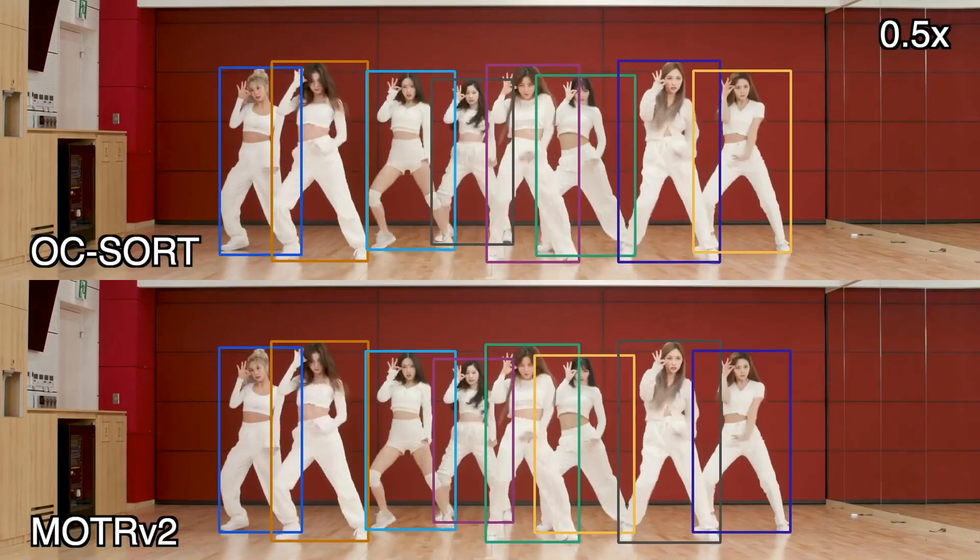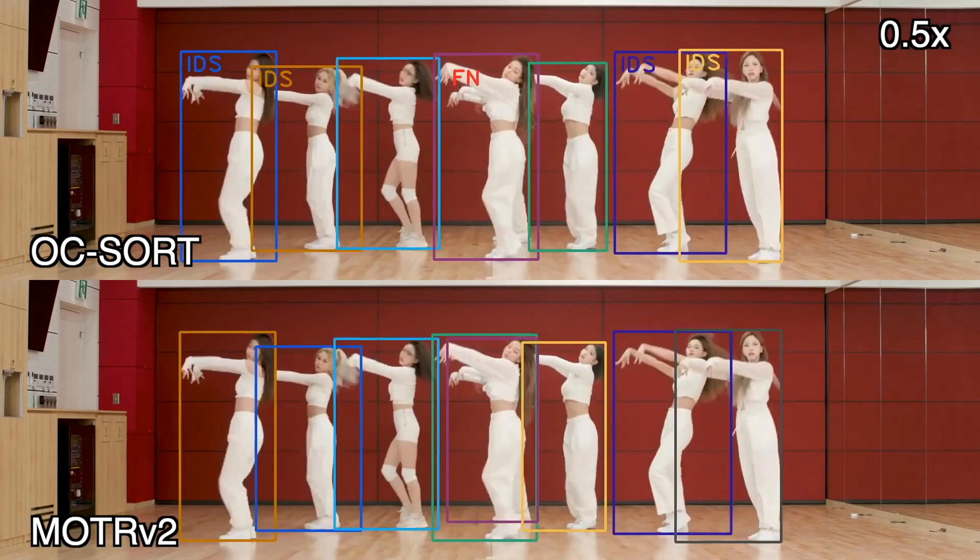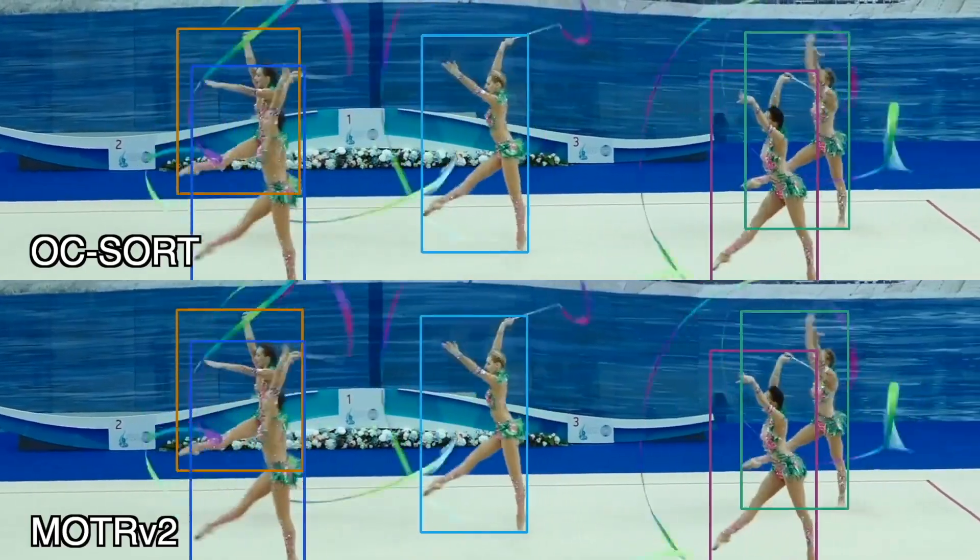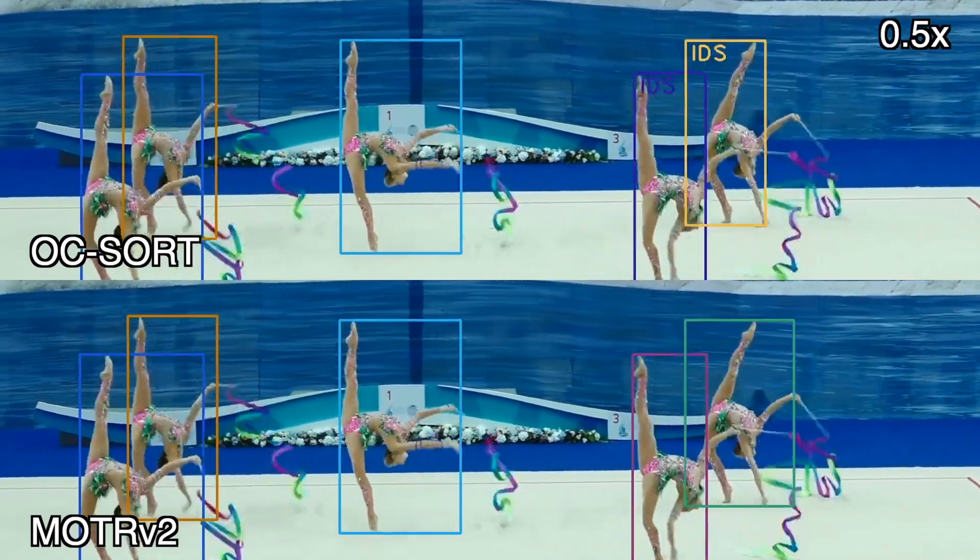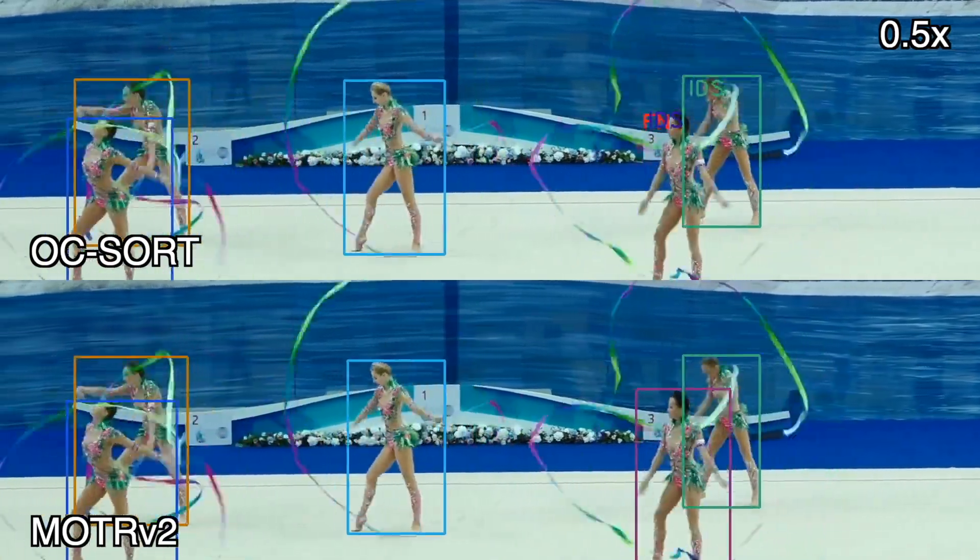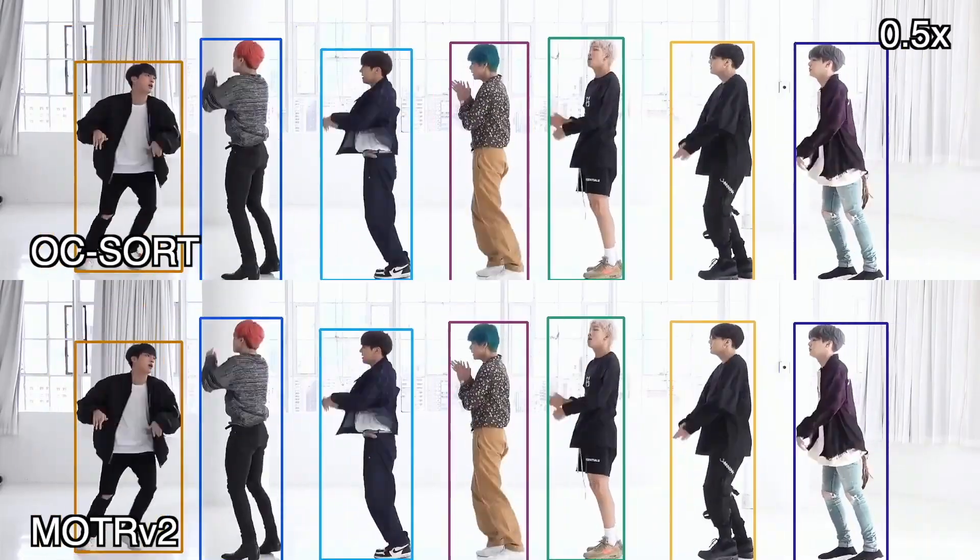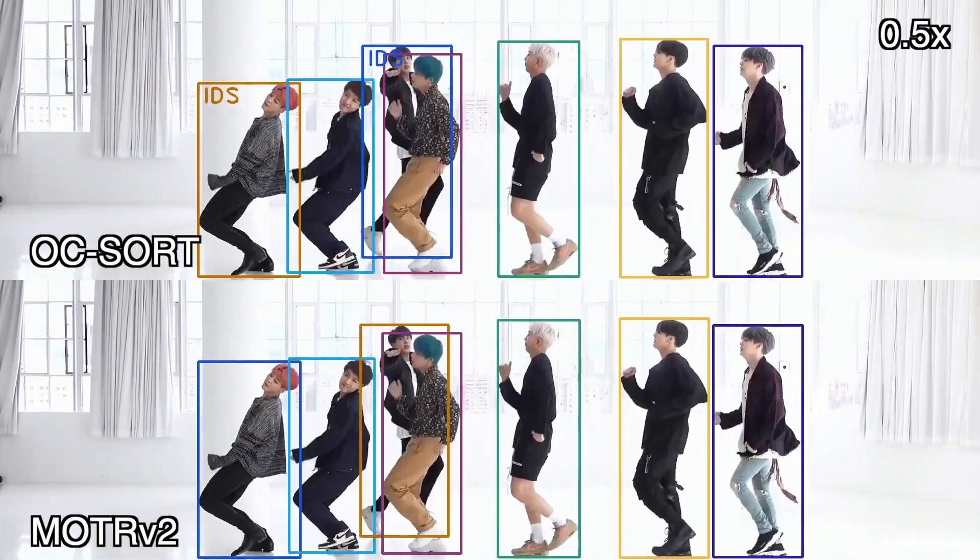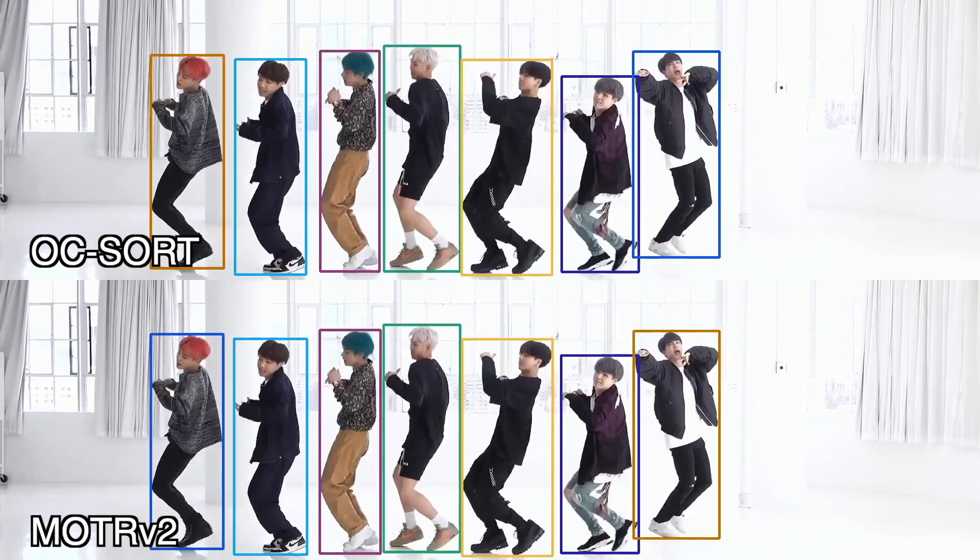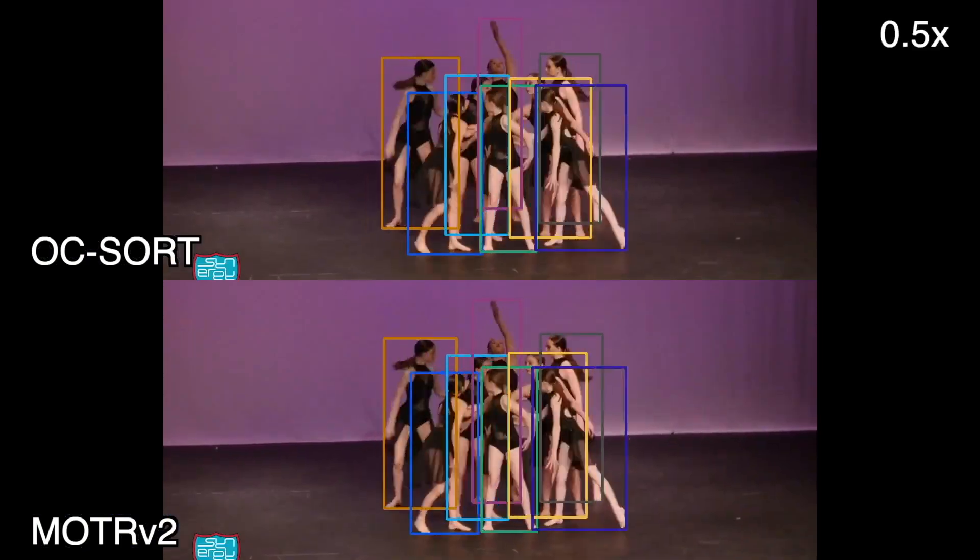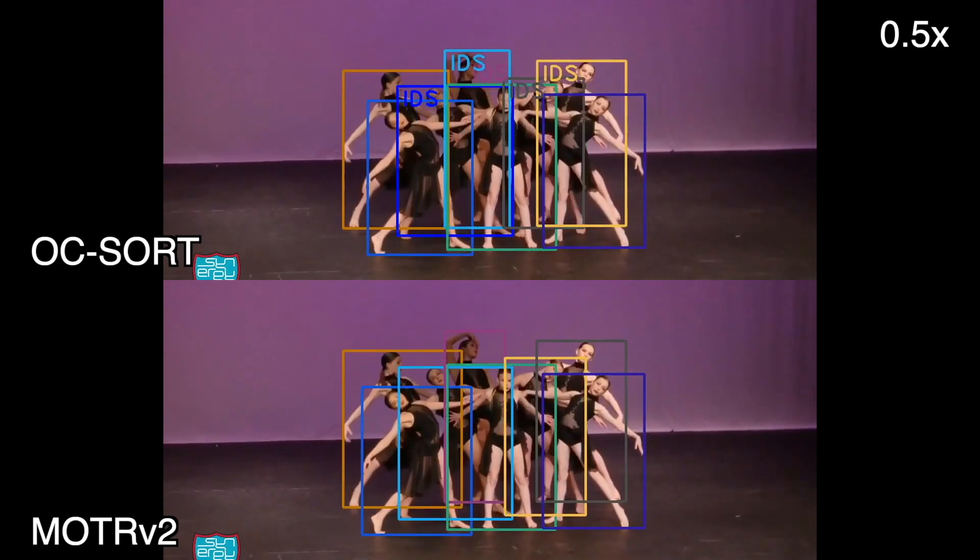Before we delve into the details, let's see a quick demonstration of MOTR V2 in action. As demonstrated in the video, MOTR V2 inherits both the excellent association performance from the transformer-based end-to-end tracking method MOTR and the strong detection performance from YOLO-X. MOTR V2 demonstrates fewer ID switches as well as false positives and false negatives in complex group dance motion.